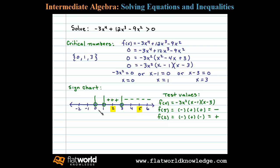Now choosing a number between 0 and 1, say 1/2, we'll test that. f(1/2): in this case we have -3 times (1/2)² will be negative. 1/2 - 1 is negative, and 1/2 - 3 is negative. Multiplying 3 negative results results in a negative number.